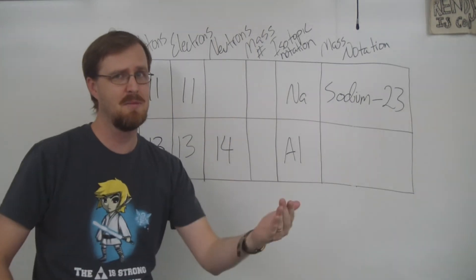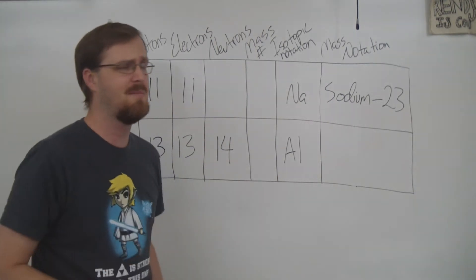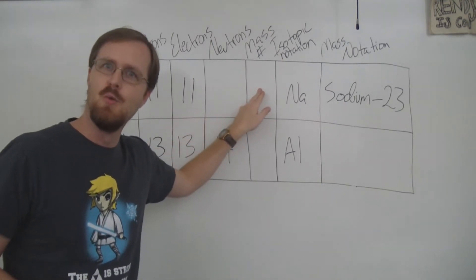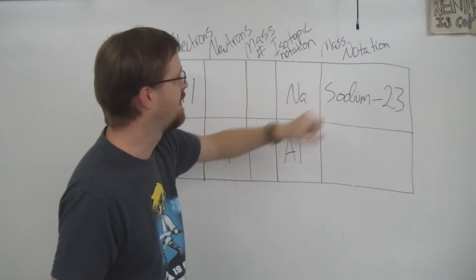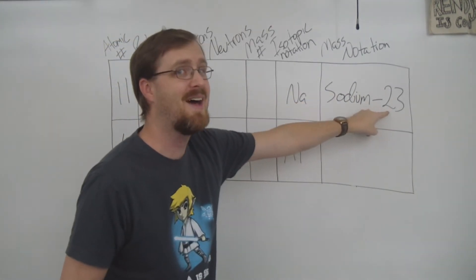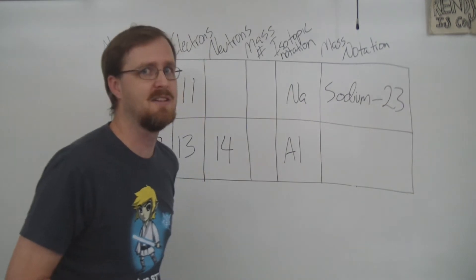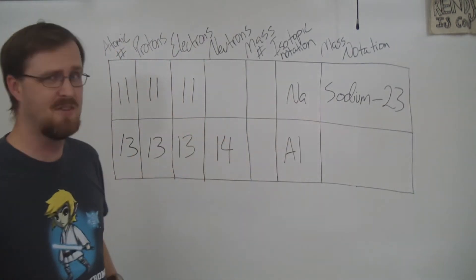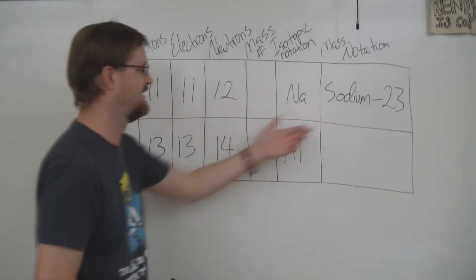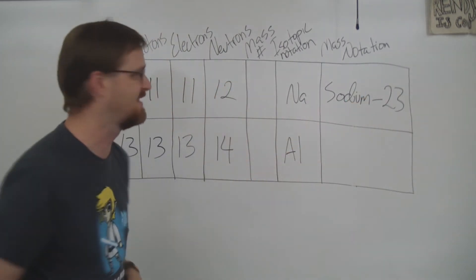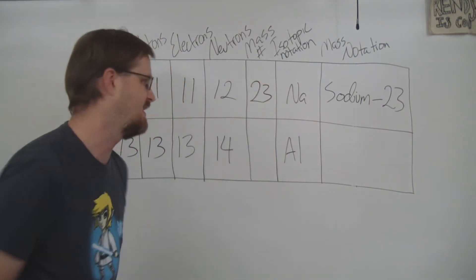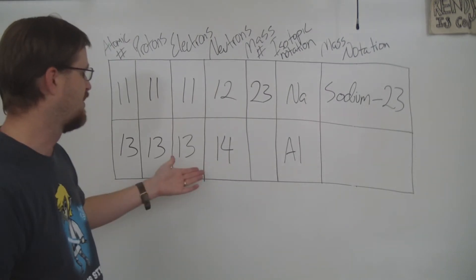If we want to know the number of neutrons, the number of protons plus the number of neutrons equals the mass number. But wait — we don't know the mass number, or do we? Over here in the mass notation it says sodium-23, and that is the mass number. So we take 23 minus 11 and we get 12. And since the mass notation gives us the mass number right there, let's fill it in: 23.